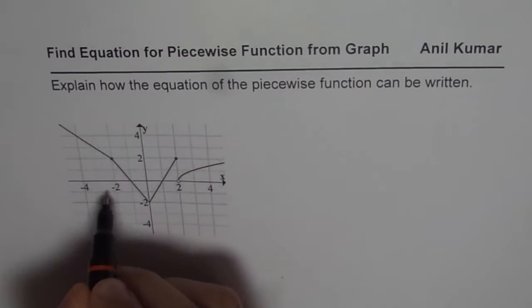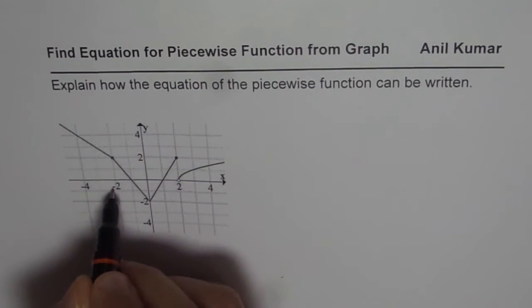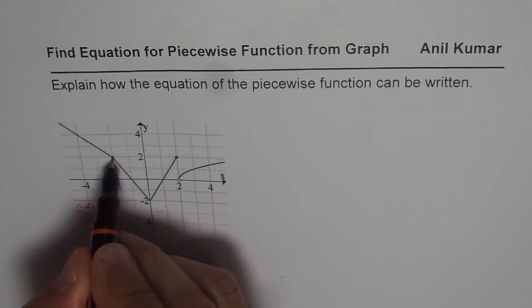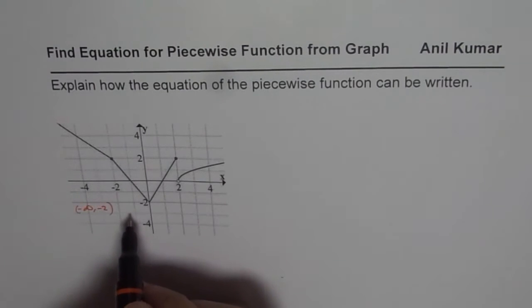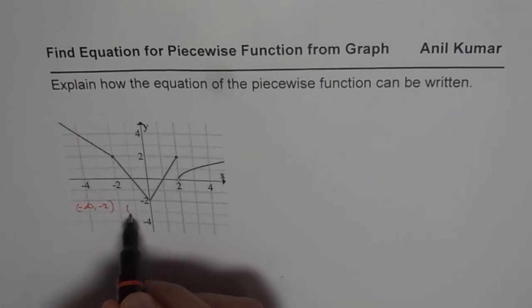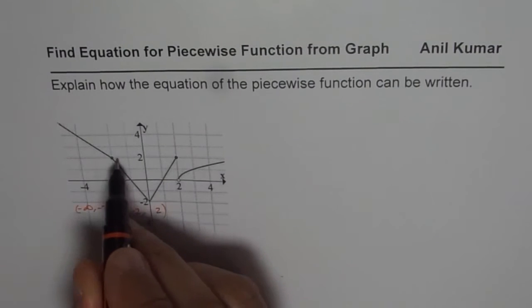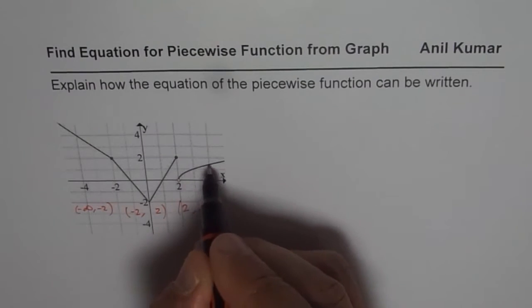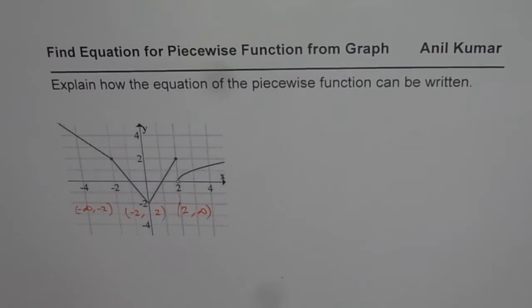So one of the piece is from minus infinity to minus 2, that seems to be a straight line. And then we have a piece between minus 2 to 2, and that seems to be an absolute function. And from 2 to infinity we have square root function. So basically we could break it down into 3 different pieces. So we observe that there are 3 different pieces. So let's try to find out equation of each piece.